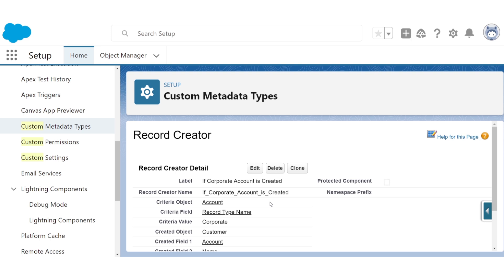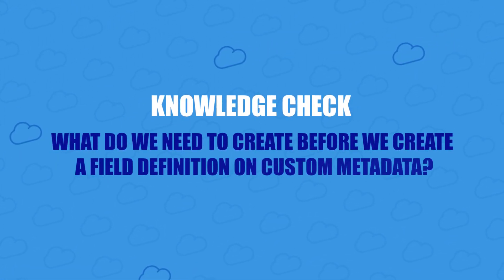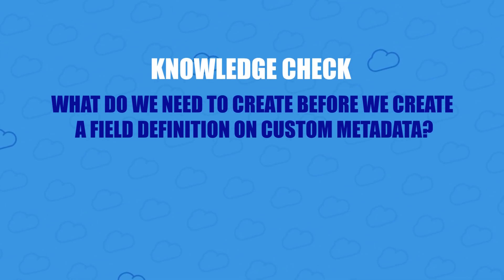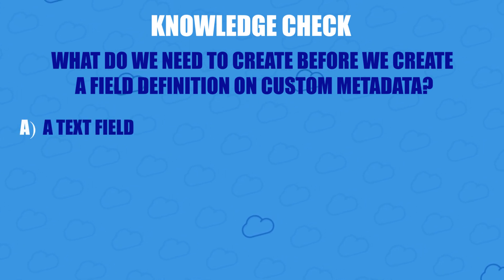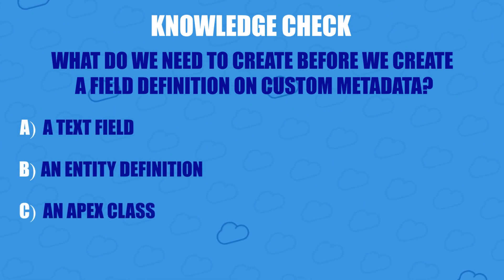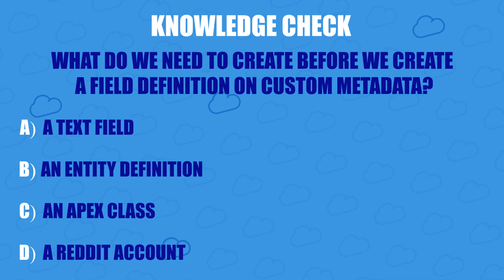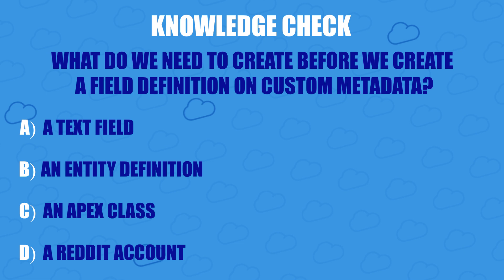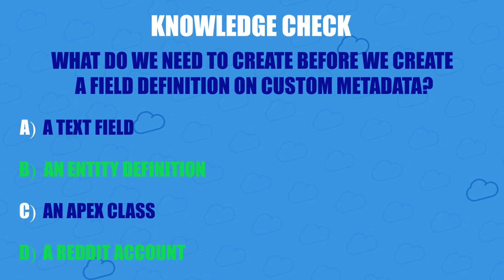So with our metadata records created, let's look at how they're going to be used in our Apex code. Before we go on, here's a quick knowledge check. What do we need to create before we create a field definition on custom metadata? A, a text field. B, an entity definition. C, an Apex class. Or D, a Reddit account. Go ahead and pause the video for a minute so you can think about it. If you chose B, you're right. And if you chose D, that's also kind of true because Reddit is an excellent source for programming help.